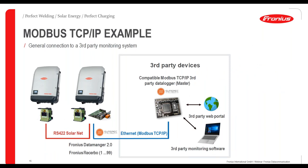The second Modbus variant is Modbus TCP/IP communication, which also enables third-party monitoring. Two inverters communicate with each other via SolarNet using an Ethernet cable, and then connect via Modbus TCP/IP over a standard Ethernet cable to a third-party device — enabling a third-party web portal or monitoring system. Thanks to the SunSpec alliance, this communication standard is implemented in the inverter.